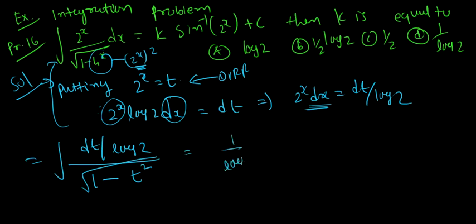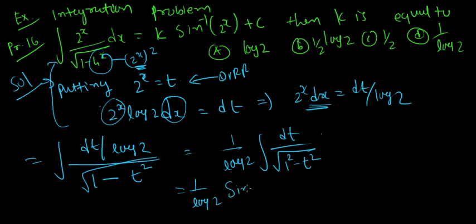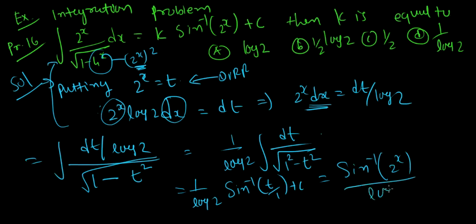1 upon log 2, integral of dt over 1 minus t squared equals 1 upon log 2 sin inverse t, which equals 1 upon log 2 sin inverse 2 raised to x plus c.